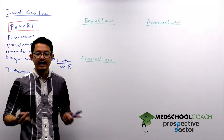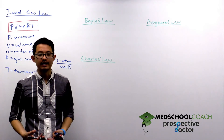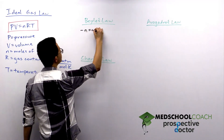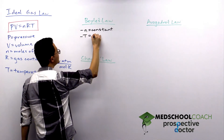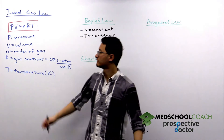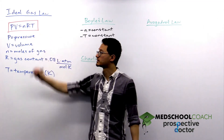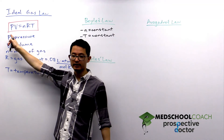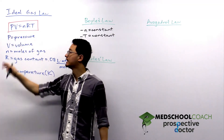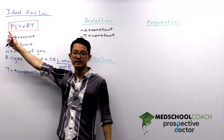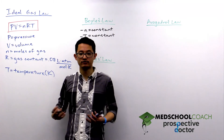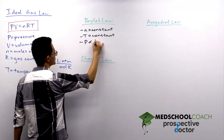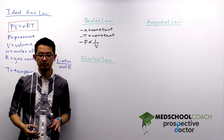Boyle's law looks at gases under conditions where the moles of gas as well as the temperature are constant. With our ideal gas law, if n and T are constant, then the entire right side is a constant. So the product of pressure and volume is a constant, meaning pressure is inversely related to volume when moles and temperature are held constant.